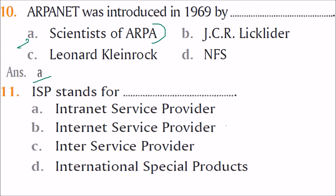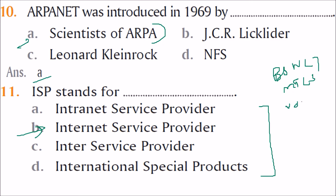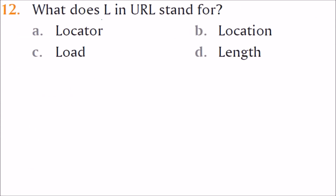ISP stands for Internet Service Provider. Examples include BSNL, MTNL, Vodafone, Idea, and Jio — they all provide internet access. Next, what does the 'L' in URL stand for? URL is Uniform Resource Locator, so 'L' stands for Locator. A is the correct answer.